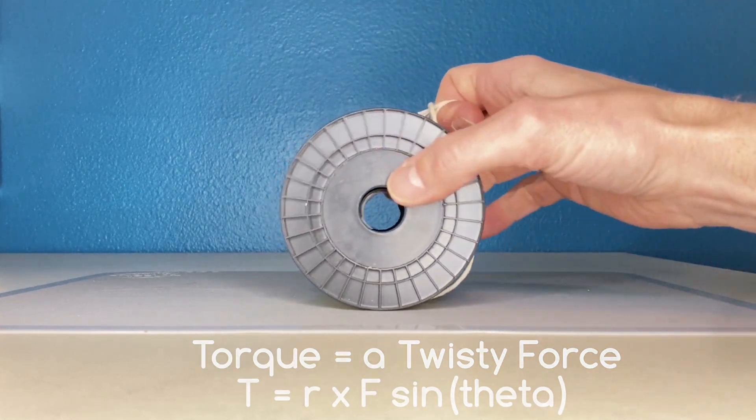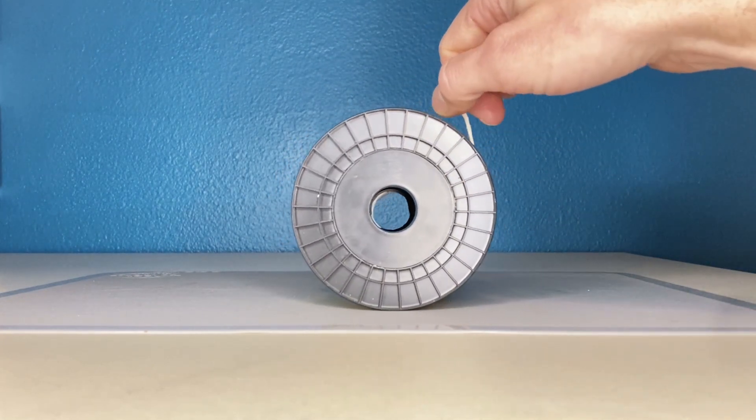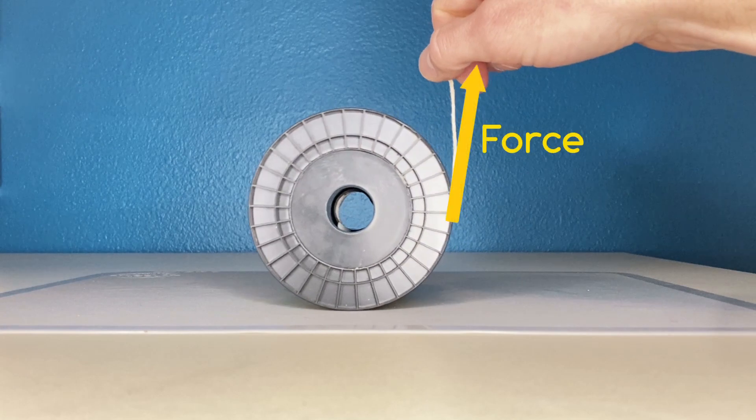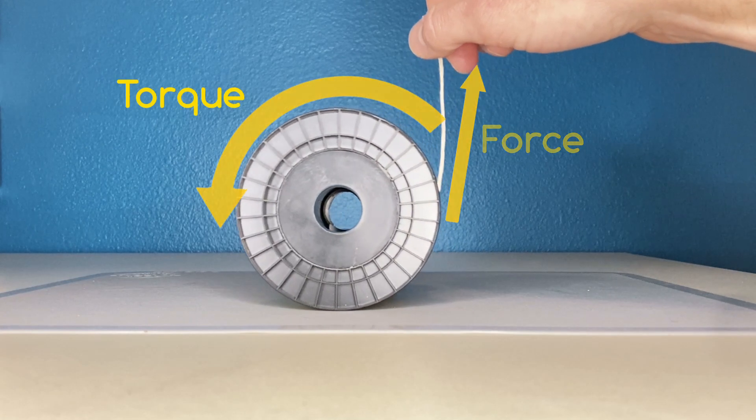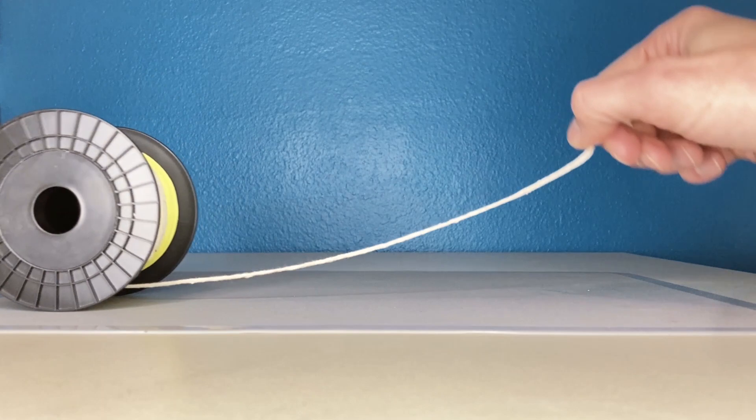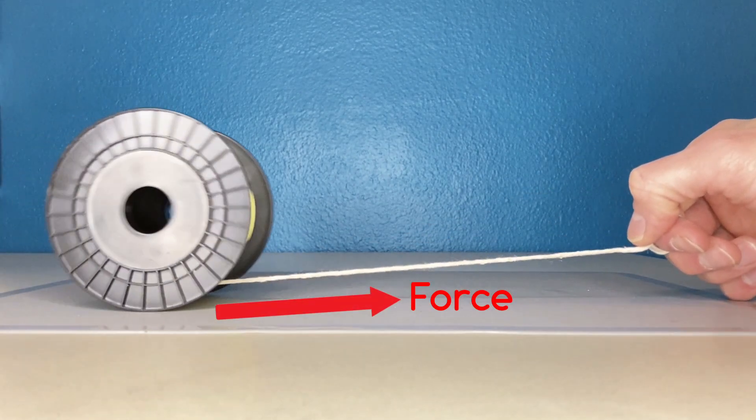You see, if I pull upward on this spool, the force vector produces a torque in one direction. Pulling horizontally produces a torque in the other direction.